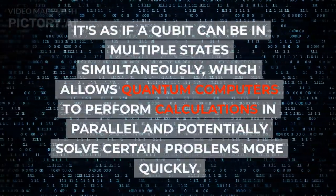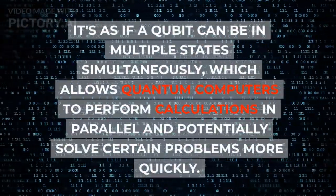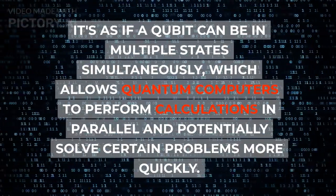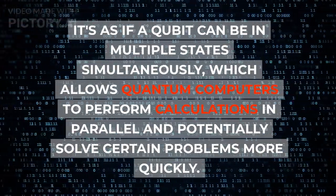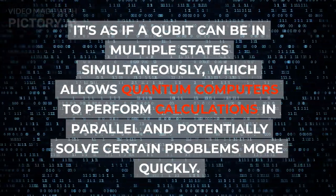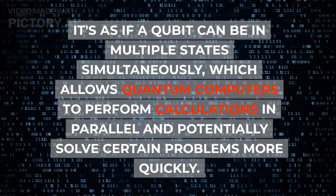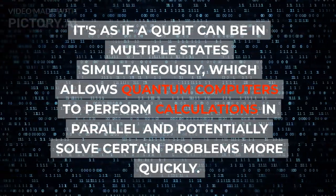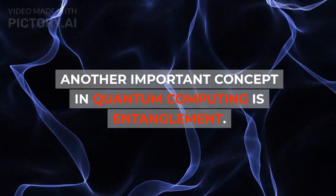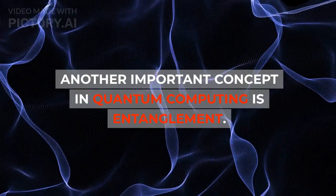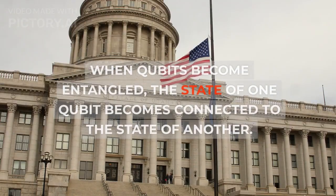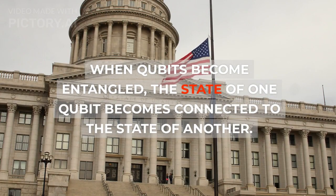It's as if a qubit can be in multiple states simultaneously, which allows quantum computers to perform calculations in parallel and potentially solve certain problems more quickly. Another important concept in quantum computing is entanglement. When qubits become entangled, the state of one qubit becomes connected to the state of another.